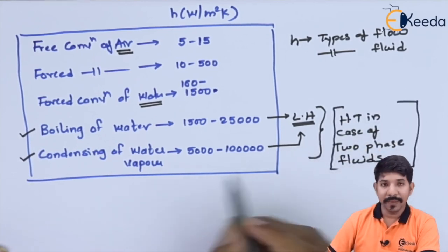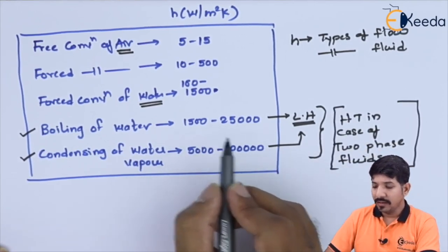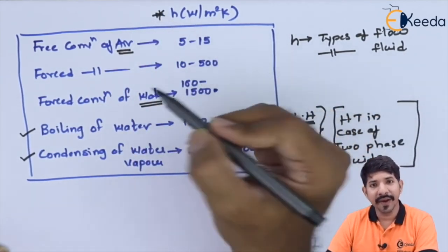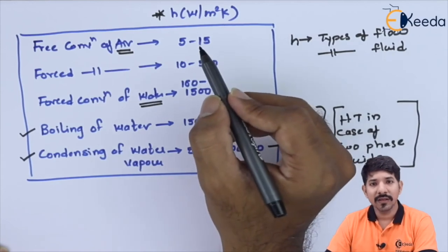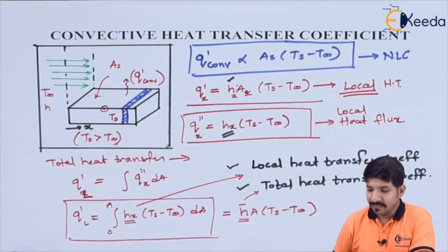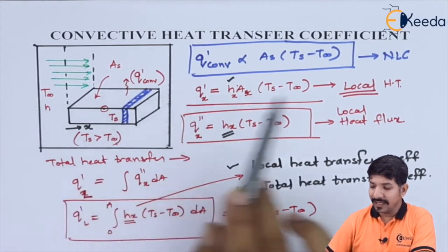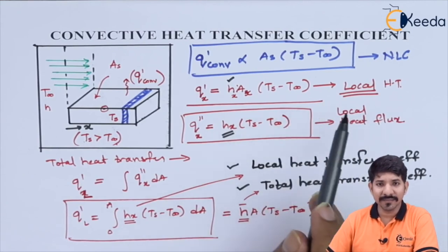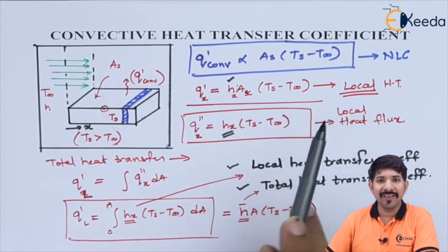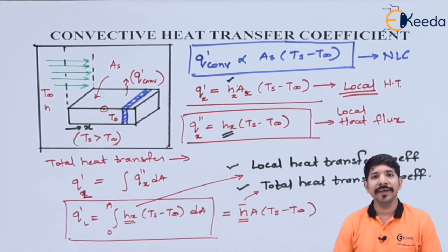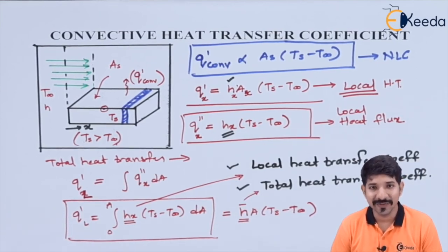So we can conclude that the value of H is not constant for a given fluid — it varies depending on the conditions of application. In this topic, we covered the convective heat transfer coefficient, the local and global heat transfer coefficients, typical numerical values, and the parameters H depends on. Thank you for watching. Please stay tuned with Ikeda.